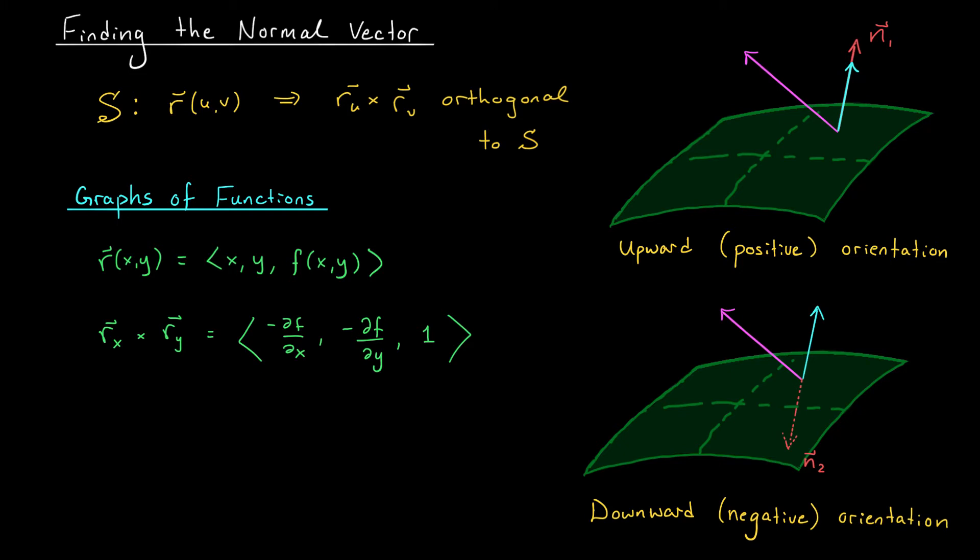So let's first consider the simple case where we're dealing with the graph of a function, z equals f of x, y. If we use the standard parametrization for such a surface, x, y, f(x,y), then we've seen that r_x cross r_y can be given by this expression here. And therefore, a unit normal vector to our surface is N equals r_x cross r_y divided by the norm of r_x cross r_y. Notice that if we compute the normal vector in this way, we're always going to get a positive value for our z component, which means the normal vector is pointing upward from our surface S. We call this upward or positive orientation.